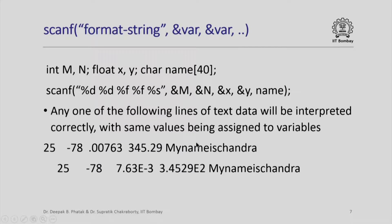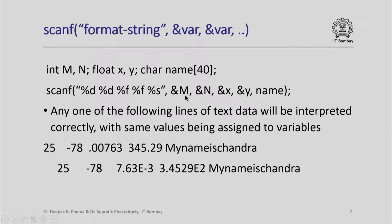Here is an example of scanf. Scanf does the opposite conversion — it uses the format string to interpret values given on input and converts each to the corresponding internal format. For example, I have m and n as integer variables, x and y as floating-point variables, and a string name as a character array. Notice I have written &m, &n, &x, and &y. The reason is that scanf is trying to insert values into these variables, so they must be passed by pointer reference; otherwise these variables will not change when the function returns.